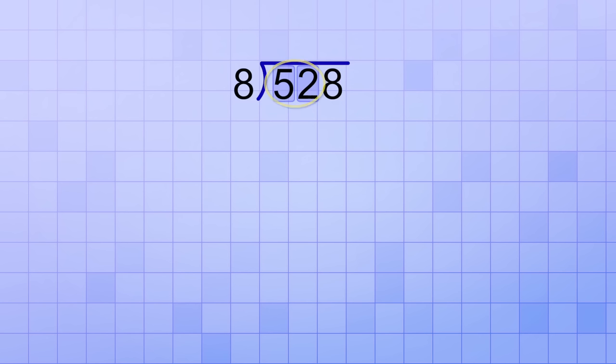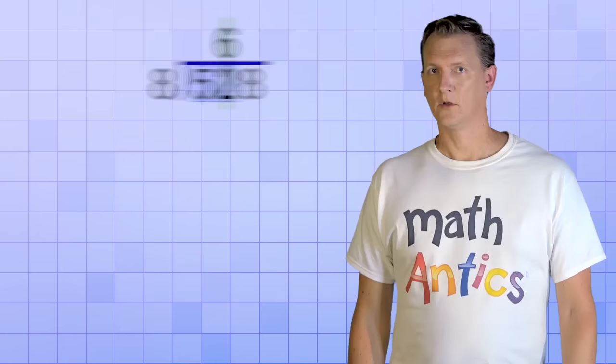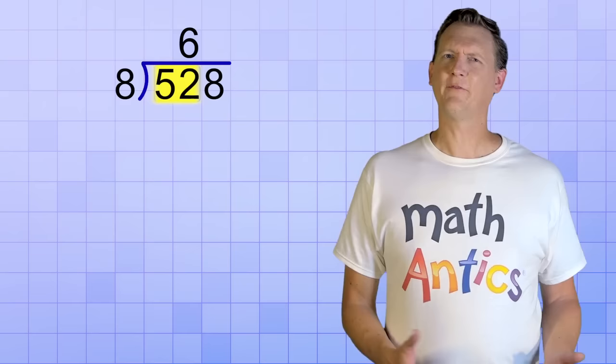Well, instead of just trying to divide the first digit all by itself, let's group the first 2 digits together. If we group the 5 and the 2 together, then our first step will be to ask, how many 8's will make 52? That's better. 8 will divide into 52 about 6 times. So we'll put a 6 in our answer line, right above the 2. Why does it go there? Because we had to skip the first digit and group it with the 2.